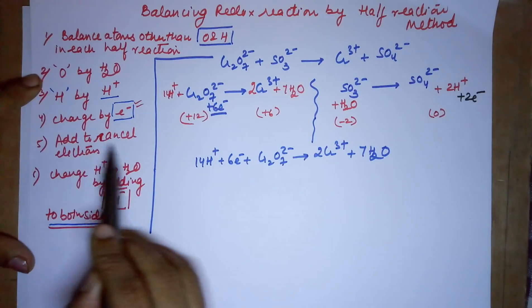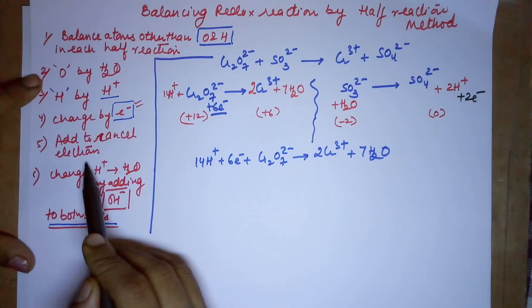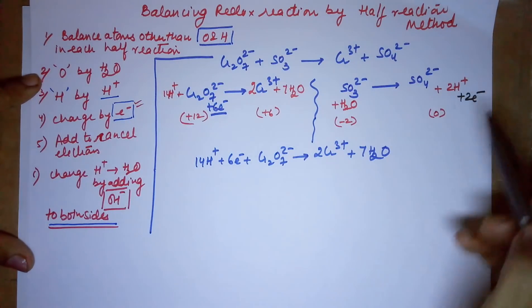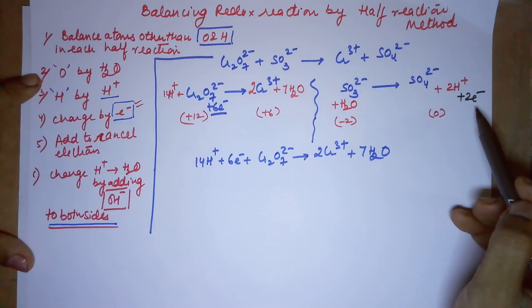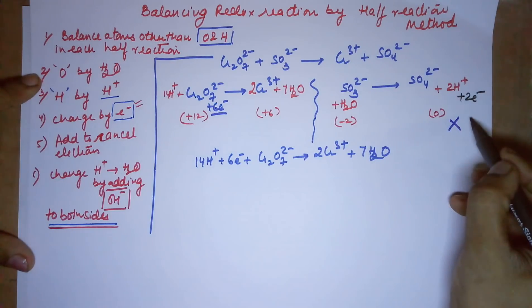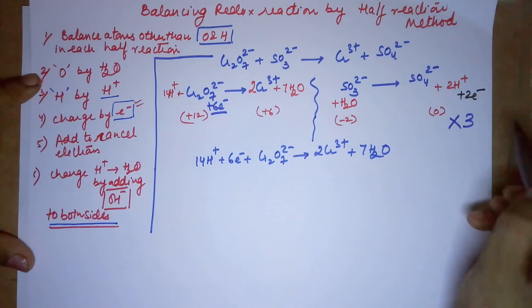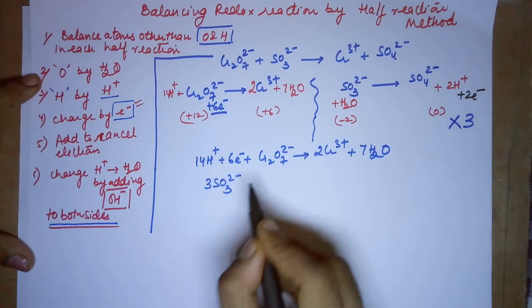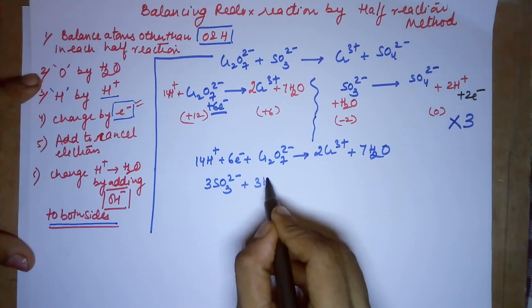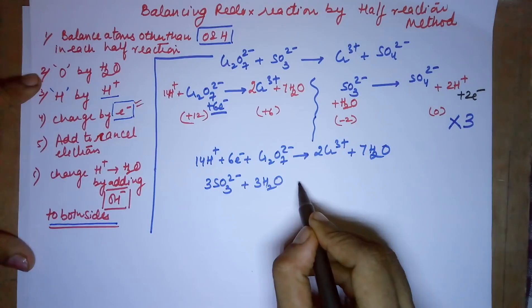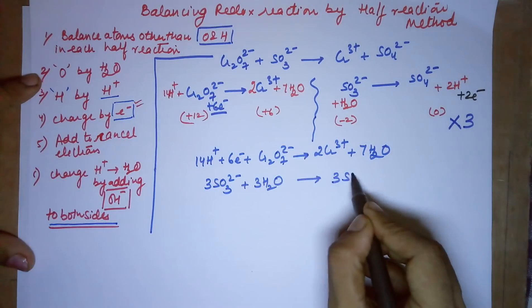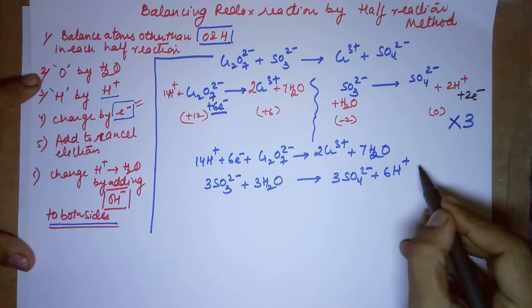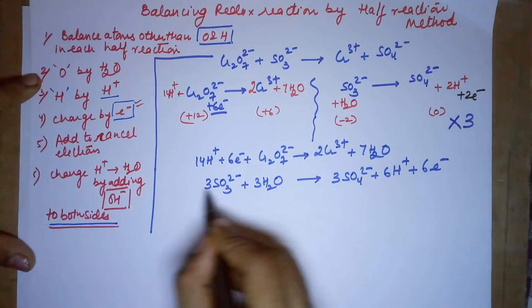Before adding the two half reactions, the electrons must cancel. The first reaction has 6 electrons and the second has 2 electrons, so multiply the second equation by 3. Multiplying the second half reaction by 3 gives: 3SO₃²⁻ + 3H₂O → 3SO₄²⁻ + 6H⁺ + 6e⁻.